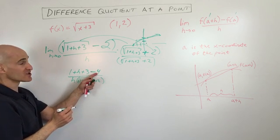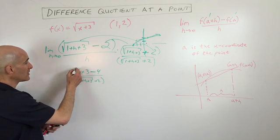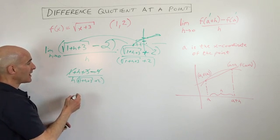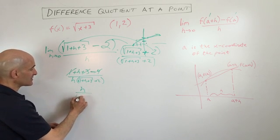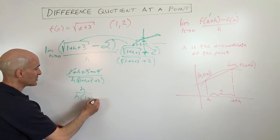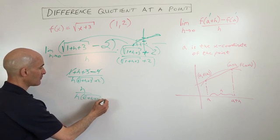We've got three minus four, which is negative one, plus one is zero. So those are canceling out. We've got h divided by h. So that's going to be, here, let's simplify it one step at a time. So this is going to be one divided by square root of one plus h plus three plus two.